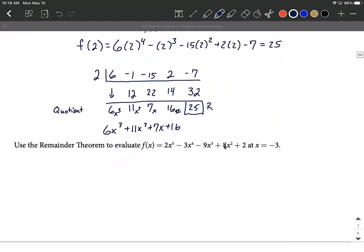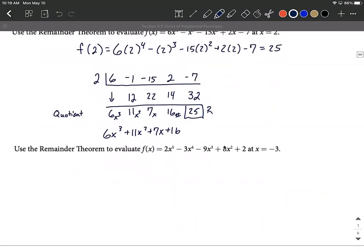All right, let's go through one more of these. This time, let's use the remainder theorem on f of x, which is 2x to the fifth minus 3x to the fourth minus 9x cubed plus 8x squared plus 2. So quite a bit going on here. Let's just plug in negative 3 if all we care about is the remainder.